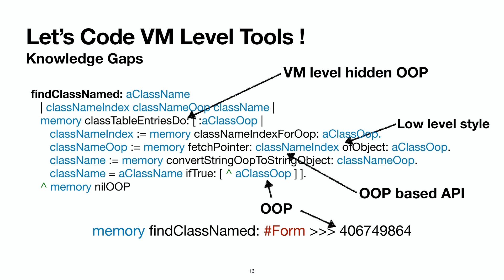What I want to highlight are the knowledge gaps a Pharo developer would encounter while trying to do this at the VM level. First, the class table entry is hidden completely from the language level developer — they do not know about it at all. Next, we have a low-level style which is difficult to manage for people that mainly write object-oriented code. We have an OOP-based API that does not differentiate between different kinds of OOPs, making them difficult to manage. And finally, Pharo developers never work with addresses — they only work with objects. This is a very wide gap for them to bridge.